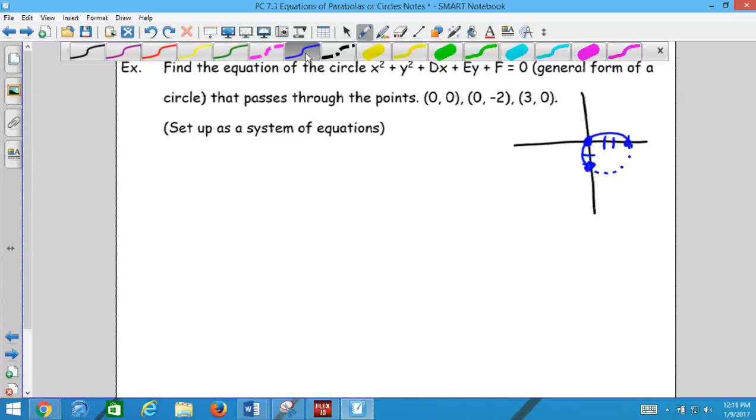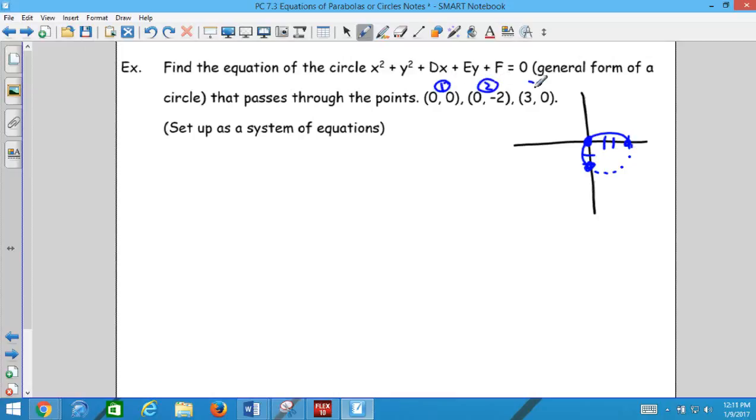Let's just plug in our ordered pairs. We've got ordered pairs one, two, and three. So that's how we're going to get our three equations. One is going to be x² which is 0² + y² which is 0² + d(0) + e(0) + f = 0.